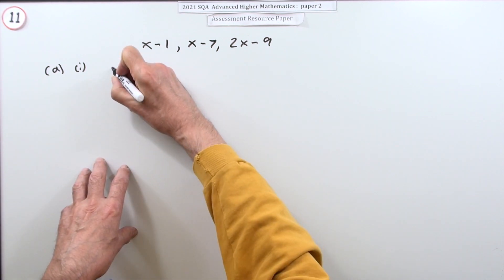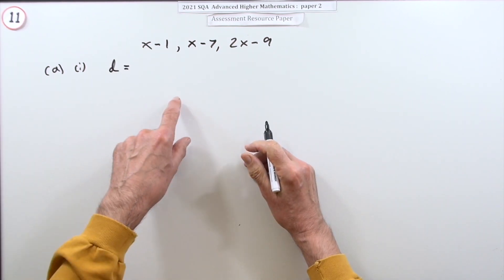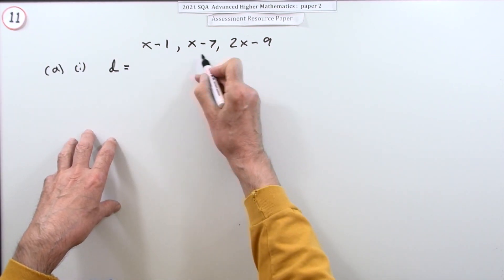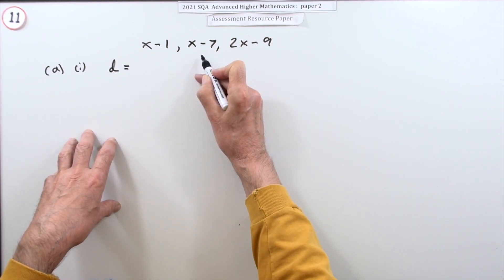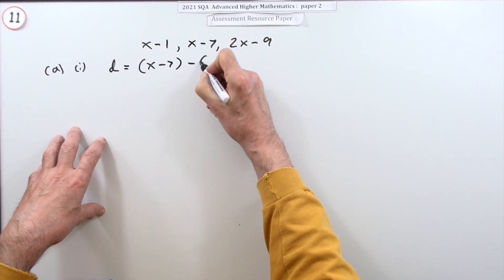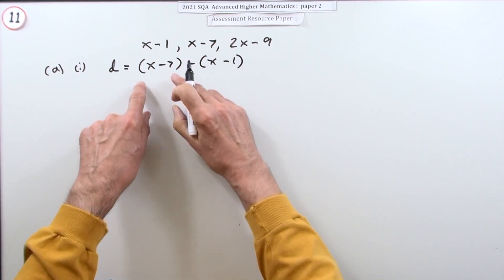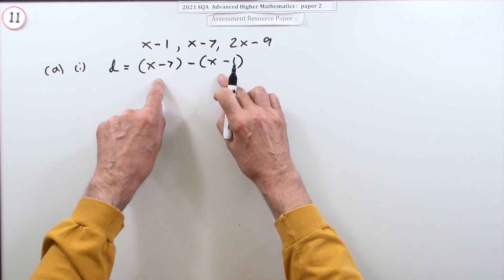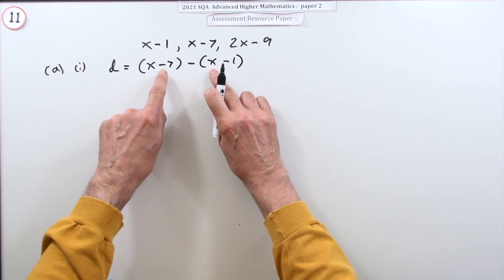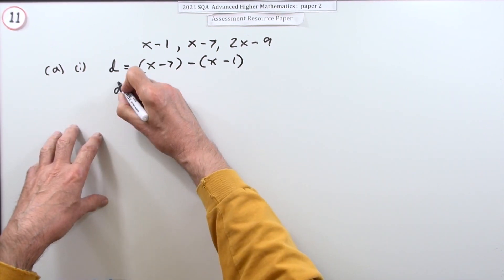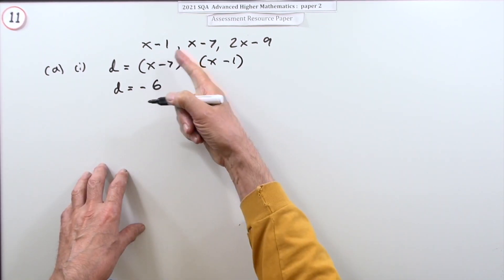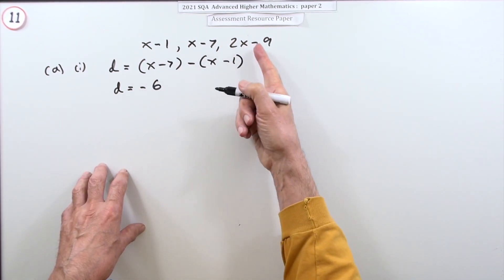The common difference is the difference between two consecutive terms. Using these two terms, that would be (x minus 7) take away (x minus 1), putting them in brackets to identify them as consecutive terms. The x's cancel out, leaving negative 7 plus 1, so d equals negative 6. You can almost see it's dropped by 6, so that must be true.